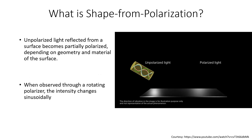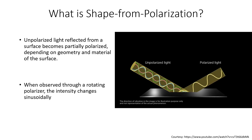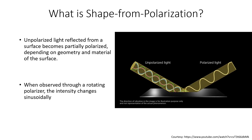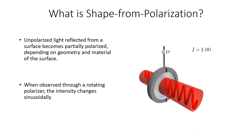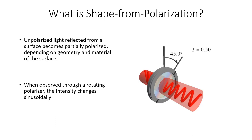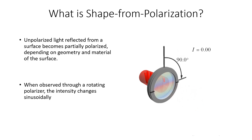Unpolarized light reflected from a surface becomes partially polarized, depending on the geometry and material of the surface. When observed through a rotating polarizer, the intensity changes sinusoidally.